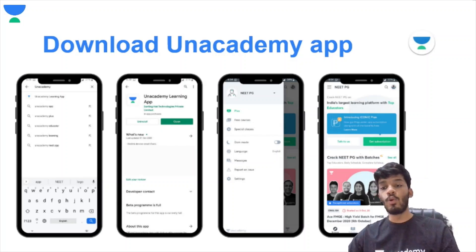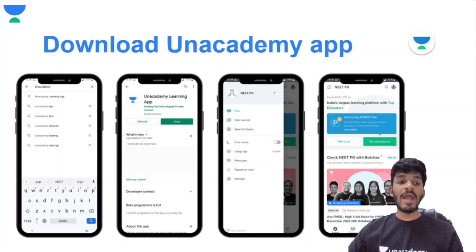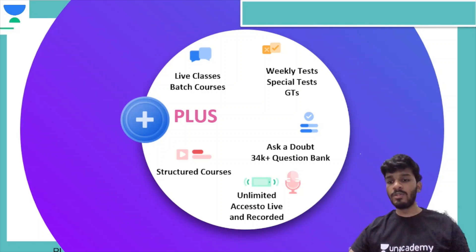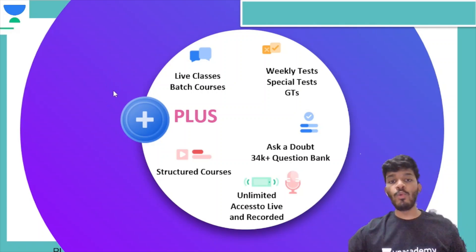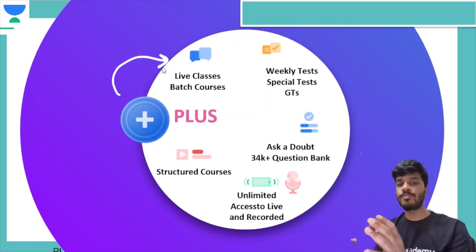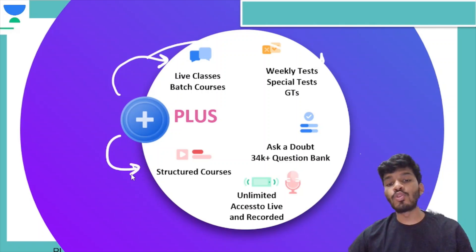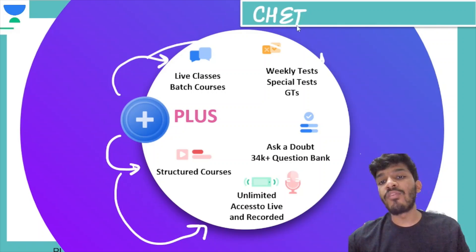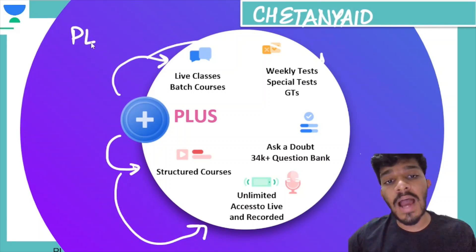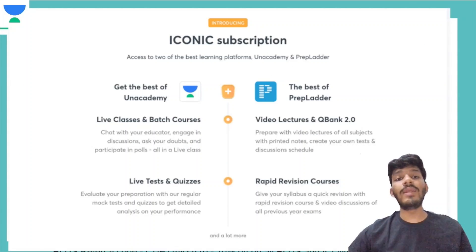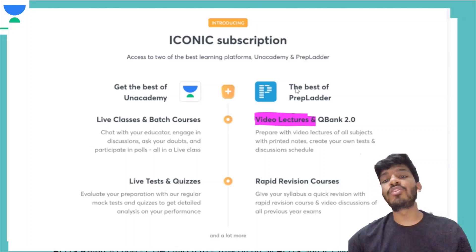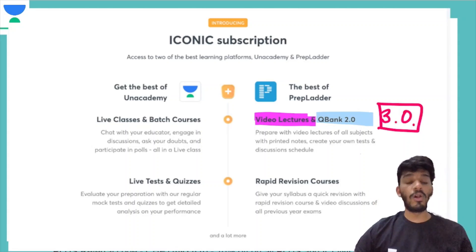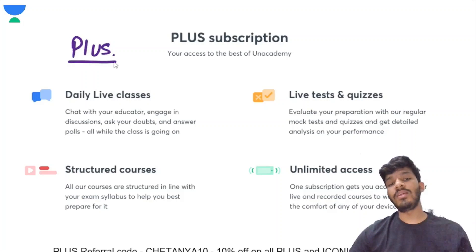So what are you waiting for? Just go ahead and download the Unacademy learning application and kickstart your preparation. With the plus subscription you get live classroom courses that feel like a continuous batch, regular testing in the form of weekly tests and special tests, access to structured courses, and unlimited access to live and recorded classes. We also have an ask it out feature. All these features come with my plus referral code.